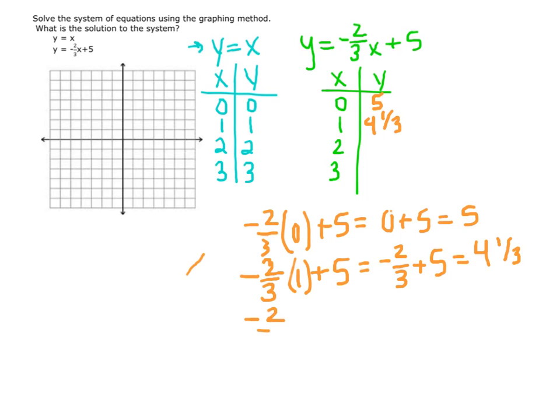When x equals 2, we have negative 2 thirds times 2 plus 5. That equals negative 4 thirds plus 5, which equals 3 and 2 thirds. So when x equals 2, y equals 3 and 2 thirds.